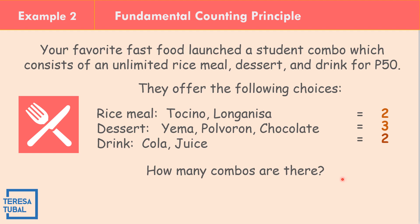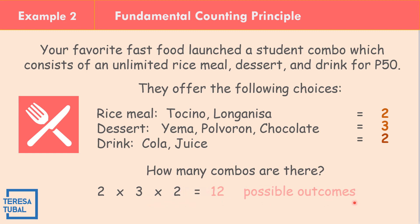For example, Tosino with yema and cola, or Longganisa with yema and cola — that's two combos already. Considering all other options like polvoron, chocolate, or juice, how many combos are there? Using the Fundamental Counting Principle: two choices for rice meal times three choices for dessert times two choices for drink gives 2 × 3 × 2 = 12 possible combos.